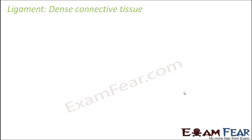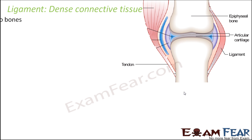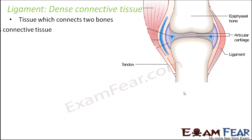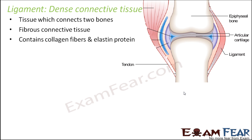The first dense connective tissue we will talk about is ligament. A ligament is a tissue which connects two bones. Bones form the framework of the body, and in order to do so, bones need to be connected to each other. So there has to be something which connects one bone to another, and that something is ligament. It connects one bone to another. It is a fibrous connective tissue, meaning the connective tissue has a lot of fibers in it.